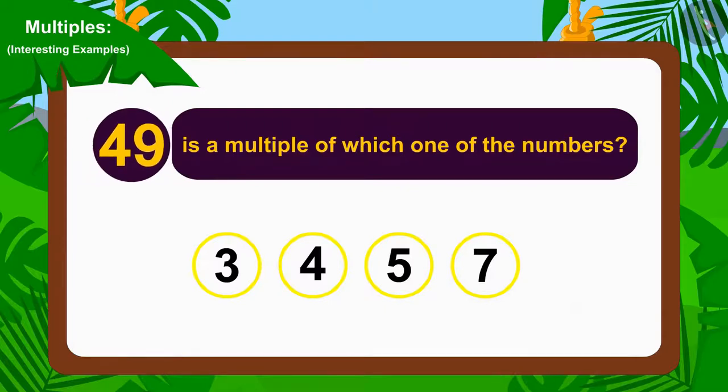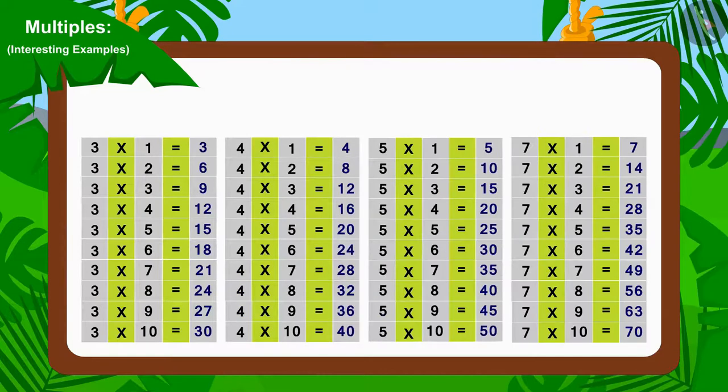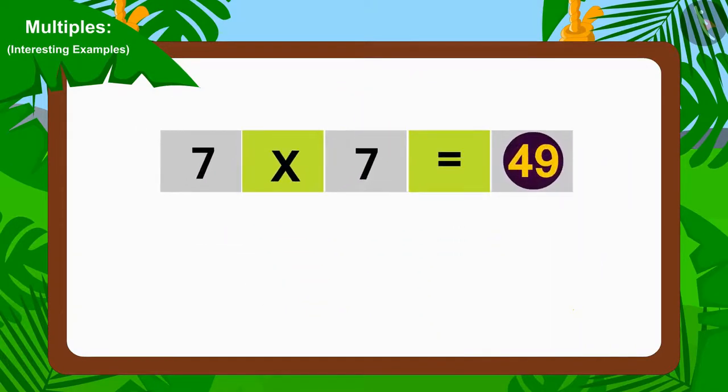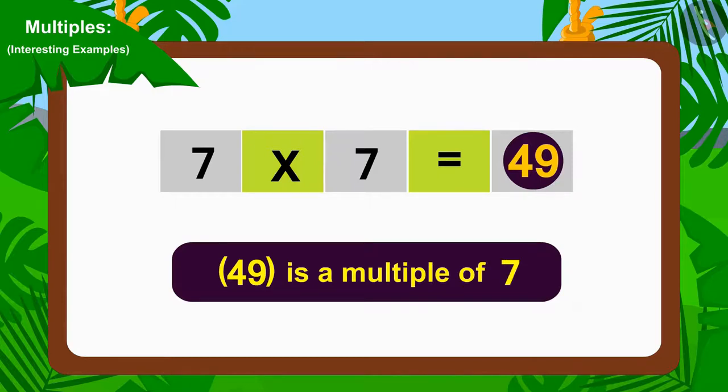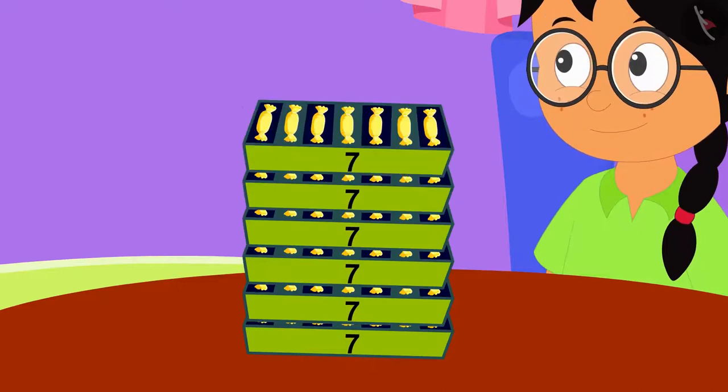49 is a multiple of which one of the numbers? If you want, you can stop the video and find the answer. Well done, children! Your answer is absolutely correct. To find 49 is a multiple of which of these numbers, we only have to see which number it can be divided by. If we look at the multiplication table of 3, 4, 5, and 7, we will find that the number 49 can be found in the multiplication table of 7 only. So, we can say that 49 is a multiple of 7. Meenu quickly made groups of 7 toffees and filled 49 toffees in 7 boxes.